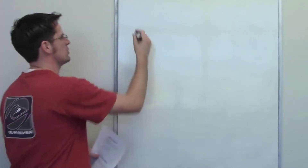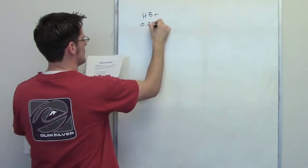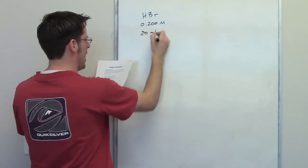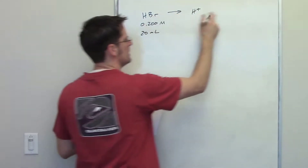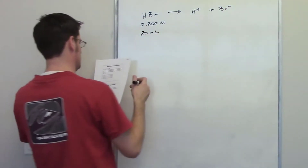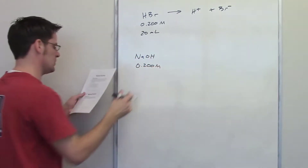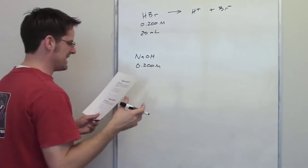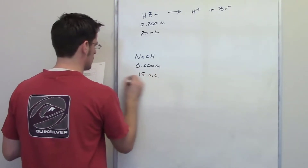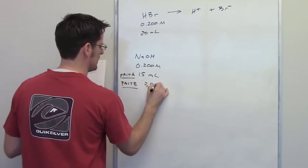In this question we're given a titration setting. We have HBr at a concentration of 0.200 molar, and 20 milliliters of it has been added. HBr is a strong acid and dissociates to H⁺ and Br⁻. We're titrating it with sodium hydroxide, also at 0.200 molar concentration. The question asks us to calculate the pH after 15 milliliters of base have been added (Part A) and after 35 milliliters have been added (Part B).